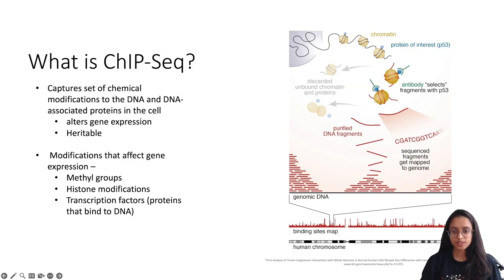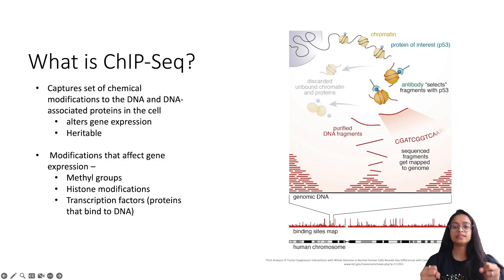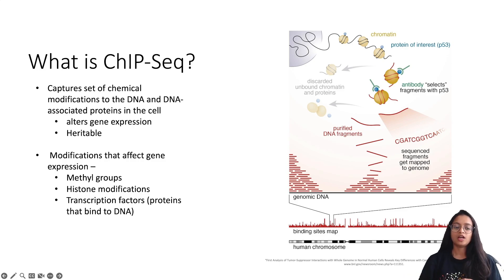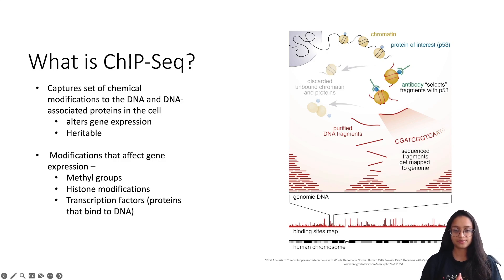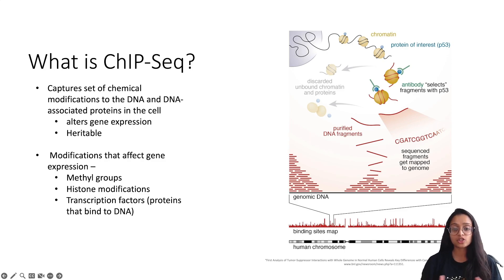We start by understanding what ChIP sequencing is. DNA, a double-stranded structure, is coiled around proteins called histones, forming a structure called a nucleosome. This structure further condenses into chromatin. Certain processes control gene expression by altering the chromatin structure. Genes actively transcribed are associated with accessible chromatin regions, while transcriptionally silent genes are found in inaccessible chromatin regions. Modifications to DNA and proteins that impact chromatin structure are referred to as epigenetic marks.